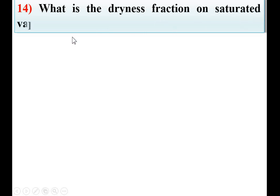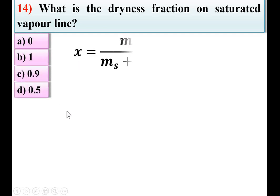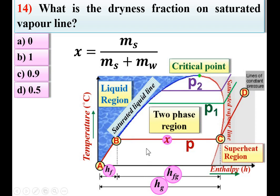Next: what is the dryness fraction on the saturated vapor line? Options: 0, 1, 0.9, or 0.5. The saturated liquid line has dryness fraction equal to 0 because there are no vapor particles (MS = 0). The saturated vapor line has dryness fraction equal to 1 because there are no water particles (MW = 0), so X = 1. B is the right answer.